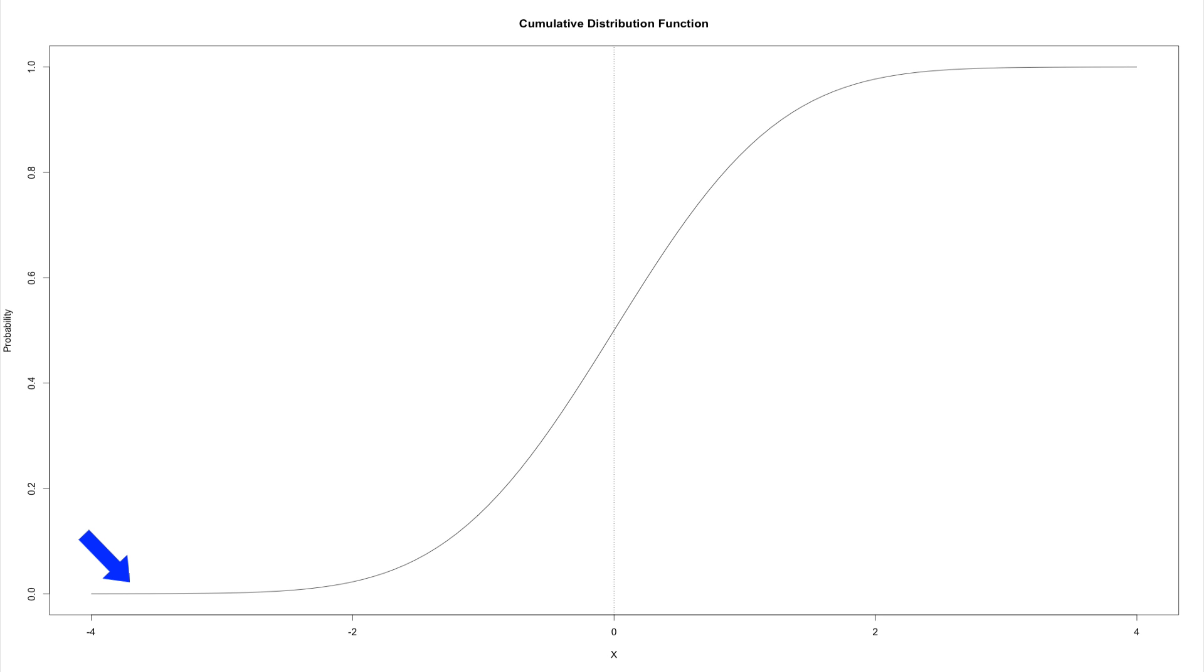As we started to increase the numbers to negative 2 and negative 1, we see that basically we're adding more of the cumulative probability to it. When you get to 0, it joins the curve, that 0 and the curve join up around 0.5. So everything to the left is about 50% of the curve.